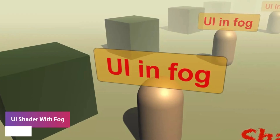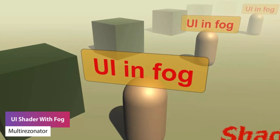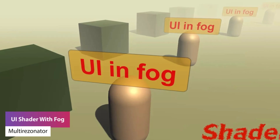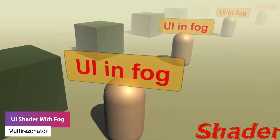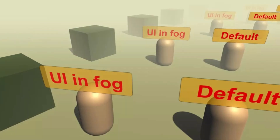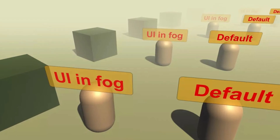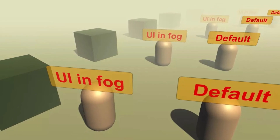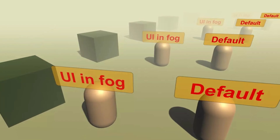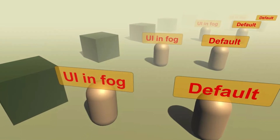The next one is the UI Shader with Fog. The default Unity UI shaders don't actually take fog into account when rendering. So if you use a world space canvas, it won't have fog applied. This asset allows the UI system to take fog into account so it becomes faded with distance.